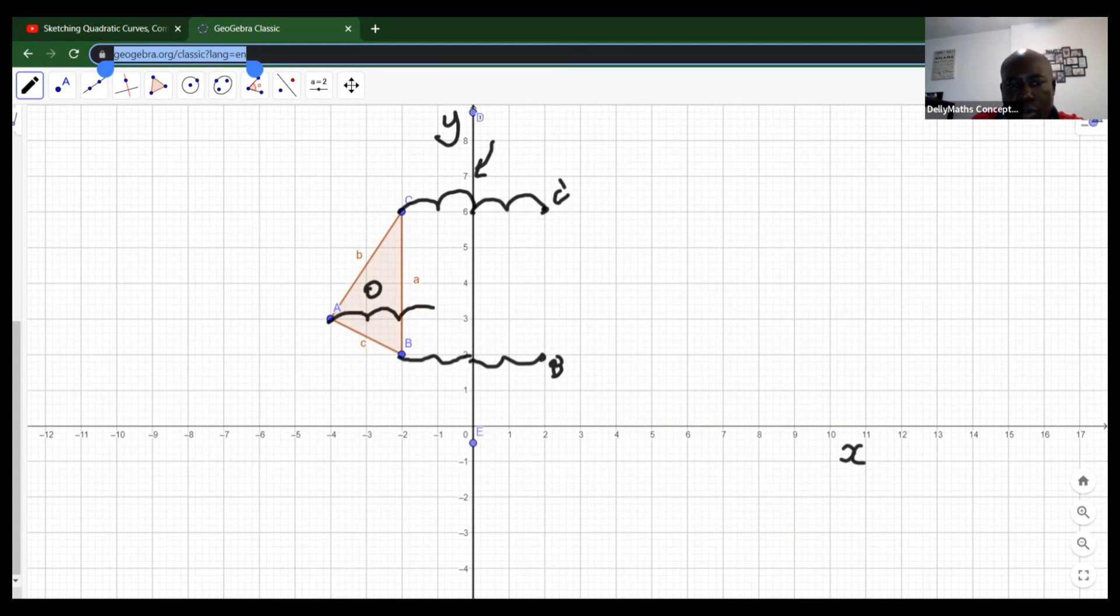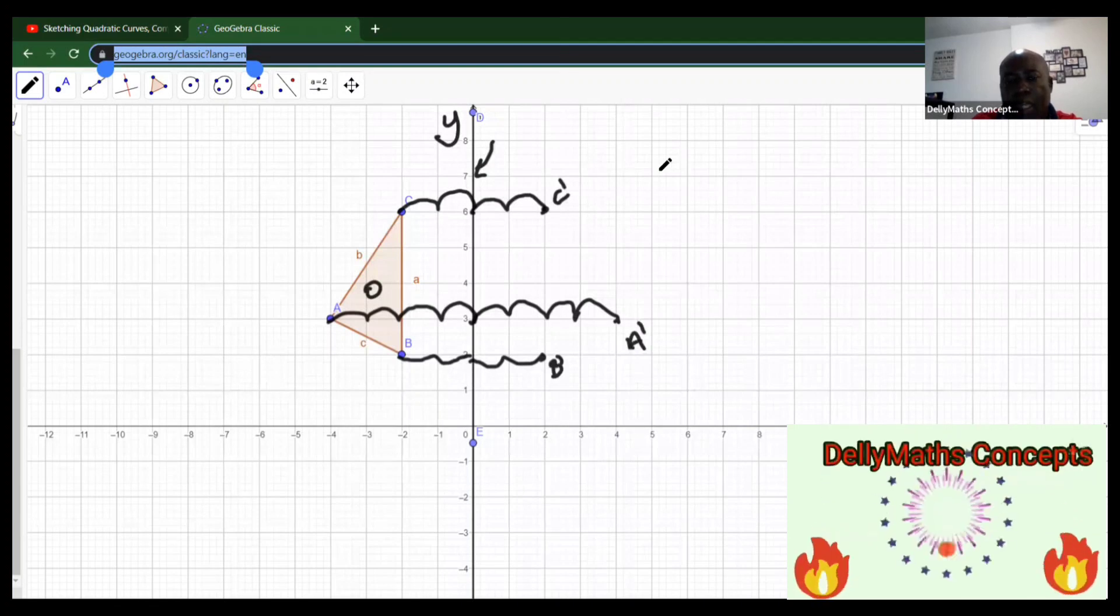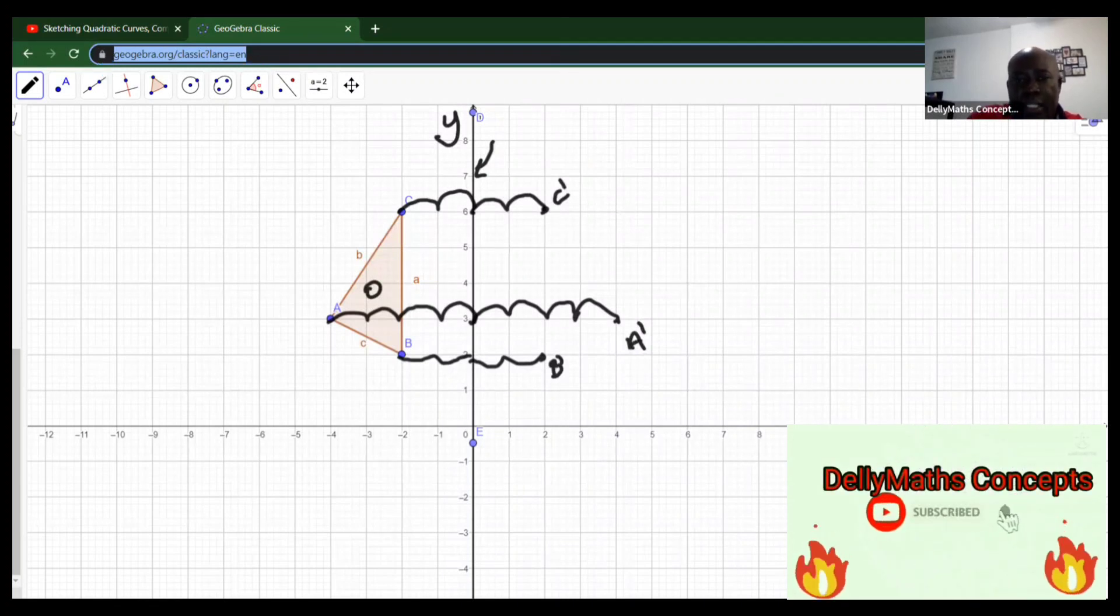A is one, two, three, four units to the left of the mirror line, so it's going to fall one, two, three, four units to the right of the mirror line.